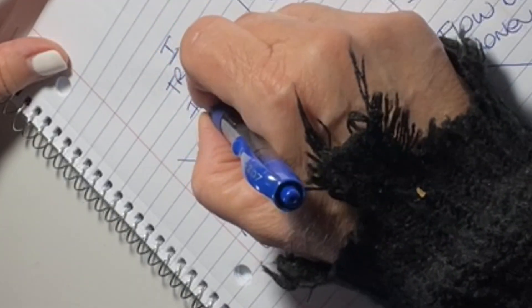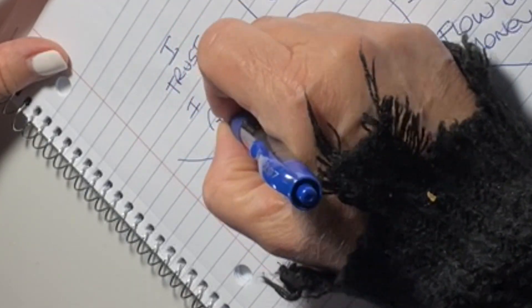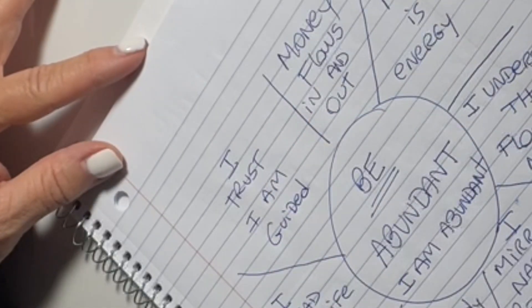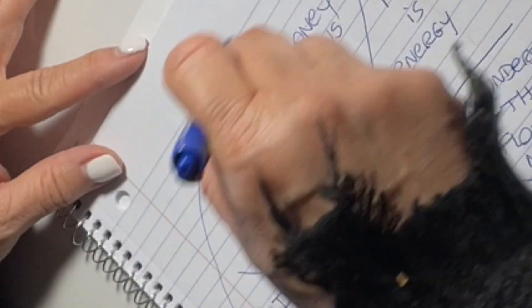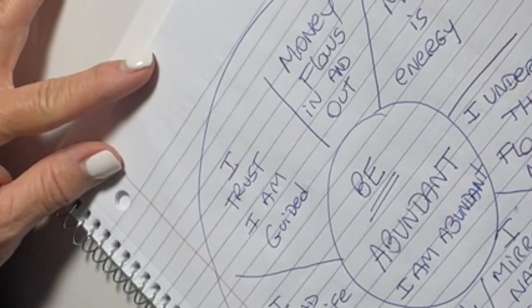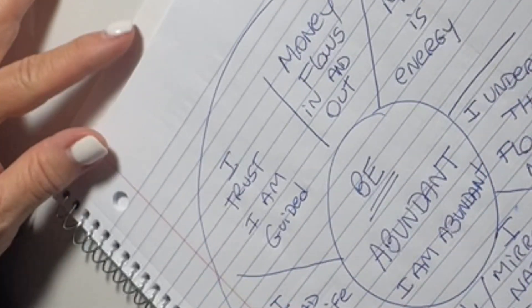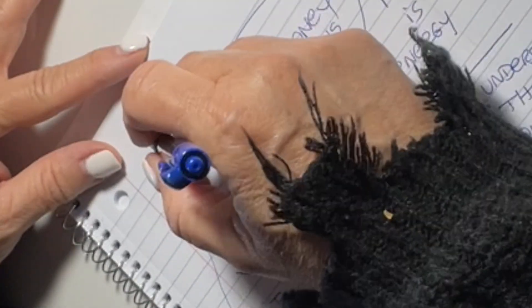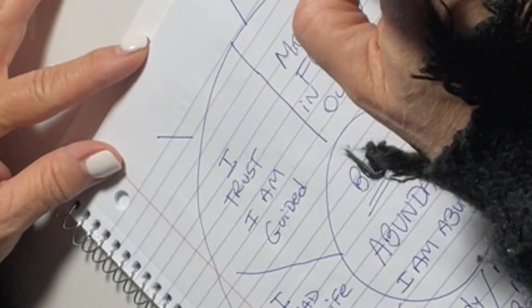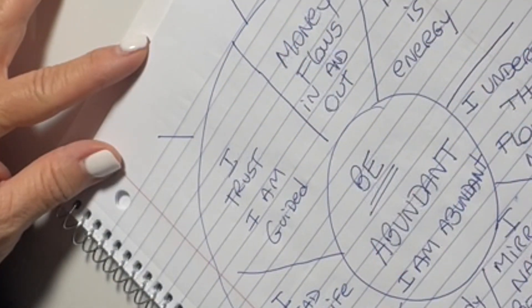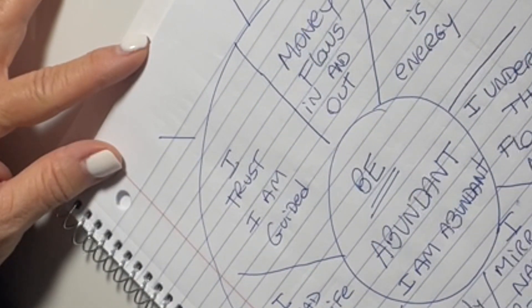I trust I am guided because all of us are. The universe is always guiding us. We just must be open for the guidance. Don't block it. Allow this guidance to happen. Then I still have space in the paper. I keep going. So let's write more.